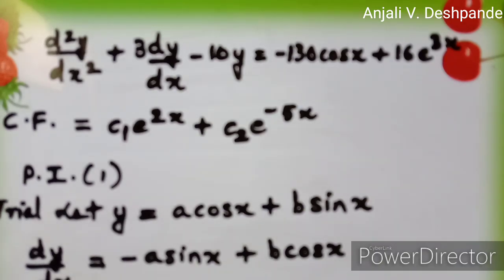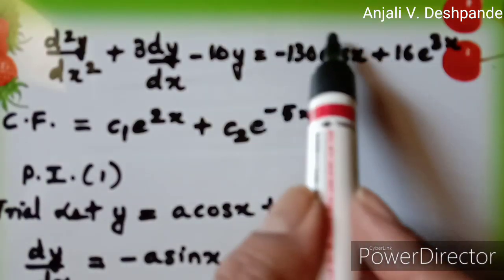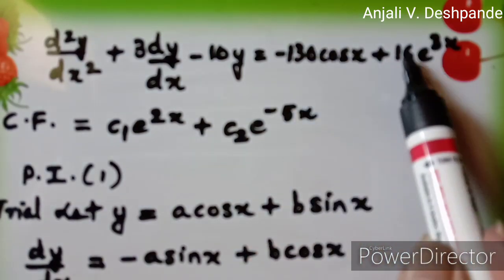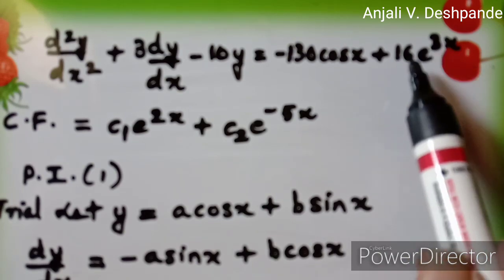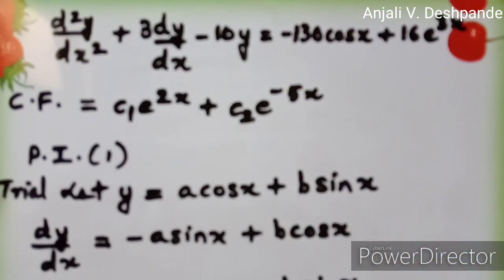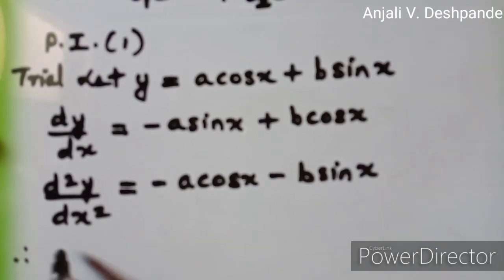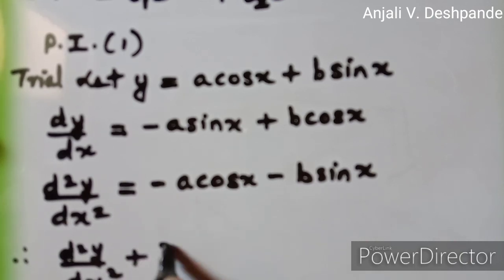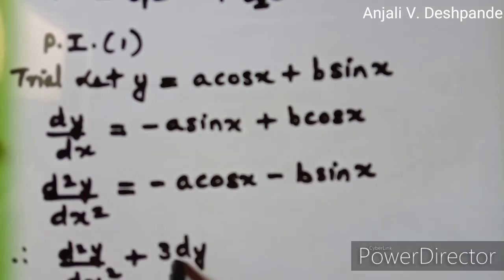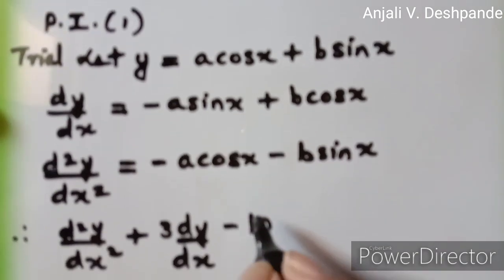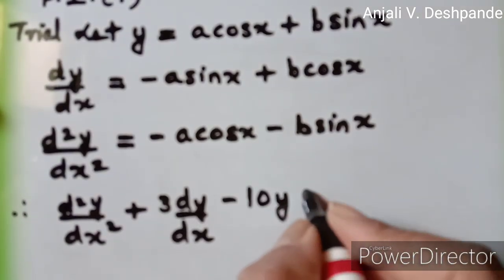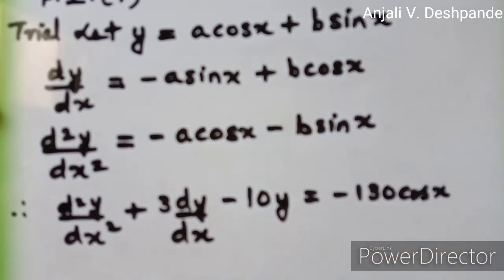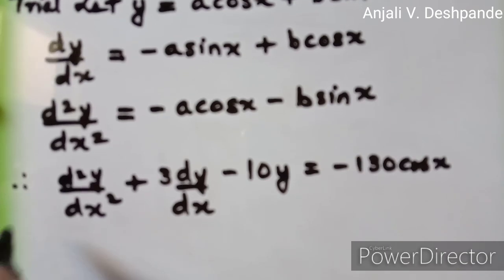If we substitute these values, remember we are finding PI only for this part — the first function, minus 130 cos x — and we will solve the second part later in the same way by assuming one trial solution. Therefore, d²y/dx² plus 3 dy/dx minus 10y is equal to minus 130 cos x implies: